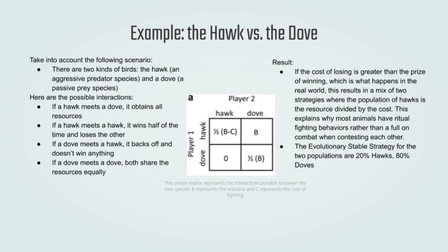This is a great example of game theory in action — the hawk versus the dove. There are two kinds of birds: the hawk, an aggressive predator, and the dove, a passive prey species. There are four possible interactions: if a hawk meets a dove, it obtains all the resources; if a hawk meets a hawk, it wins half the time and loses the other half; if a dove meets a hawk, it backs off and wins nothing; and if a dove meets a dove, both share the resources equally.